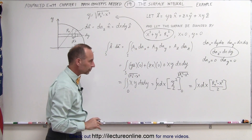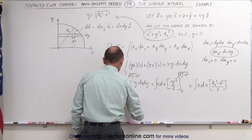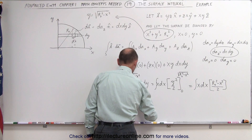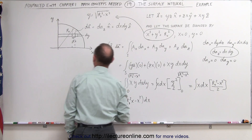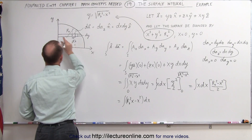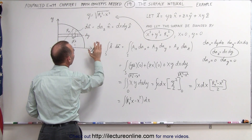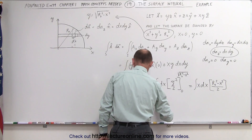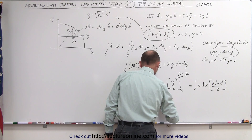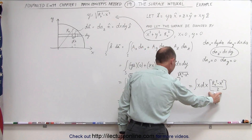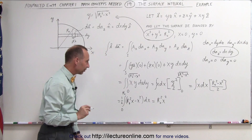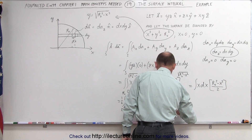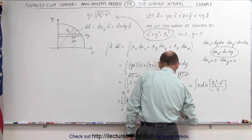Continuing on and plugging in the upper limit, we get r-sub-naught squared minus x squared, and we don't forget to divide by 2. My next integral then becomes, after multiplying through, the integral of r-sub-naught squared times x minus x cubed, times dx. The limits are from x equals 0 to x equals r-sub-naught, integrating over the entire distance. Integrating gives r-sub-naught squared times x squared over 2 minus x to the fourth over 4, evaluated from 0 to r-sub-naught.